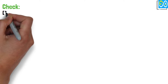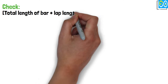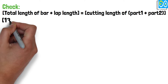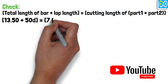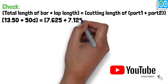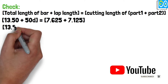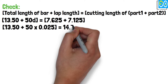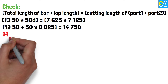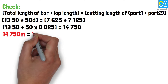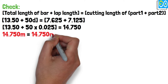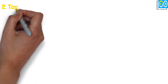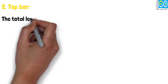Check: Total length of bar plus lap length equals cutting length of Part 1 plus Part 2. 13.5 plus 50 times 0.025 equals 7.625 plus 7.125. 13.5 plus 1.25 equals 14.75. 14.75 meters equals 14.75 meters. Verified.